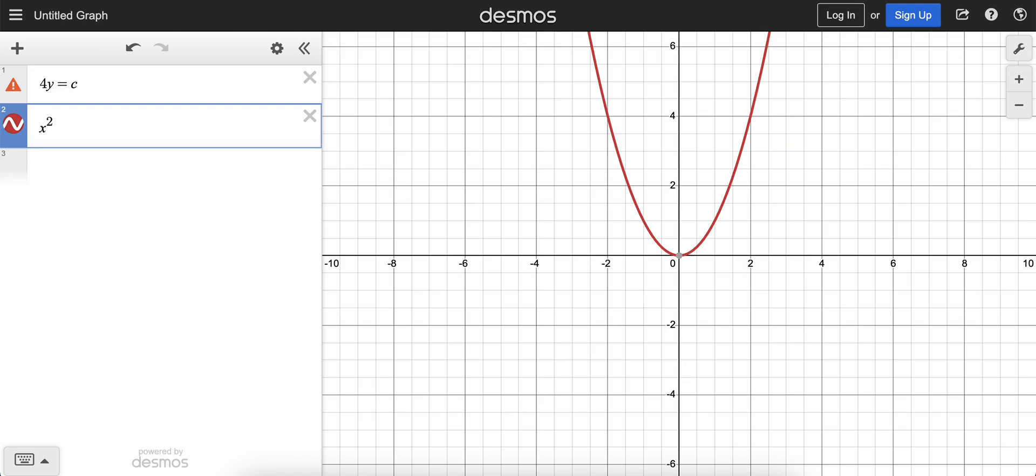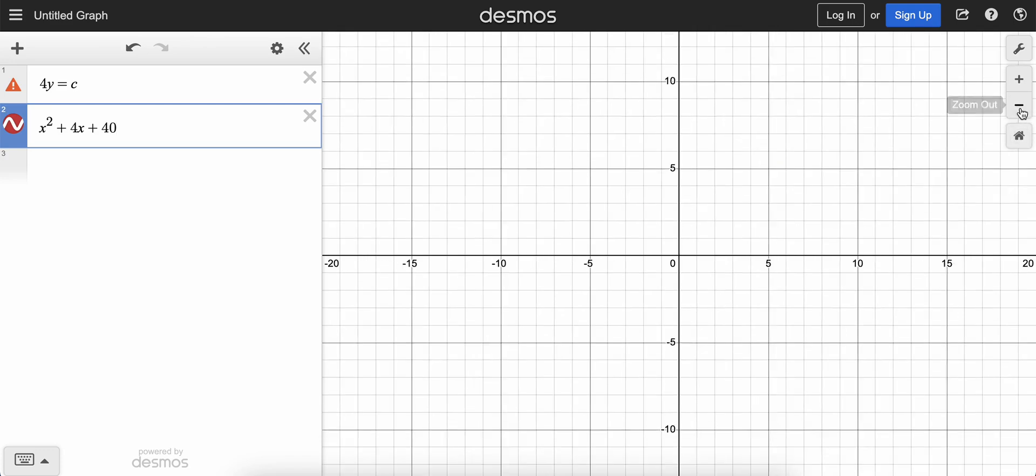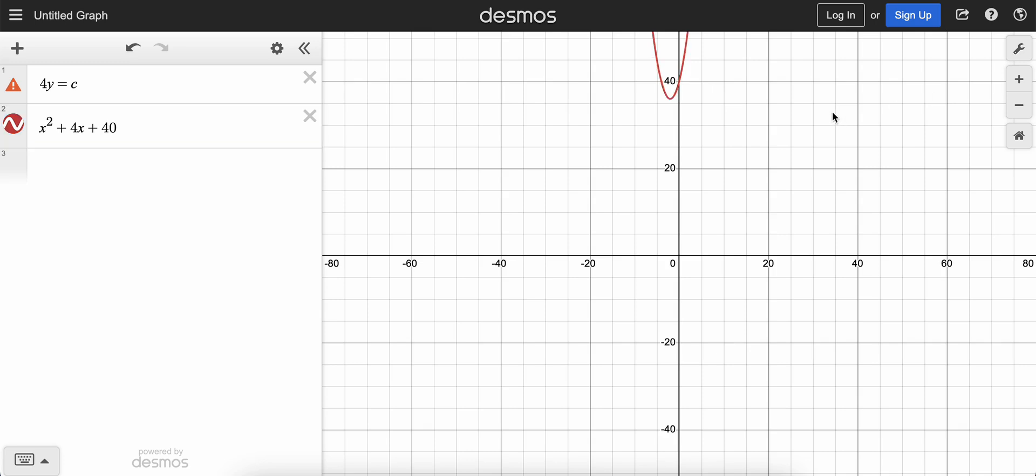x squared plus 4x plus 40. Type that in as well, and we could see that, well, there's nothing here, but we could just zoom out because our quadratic is up here.